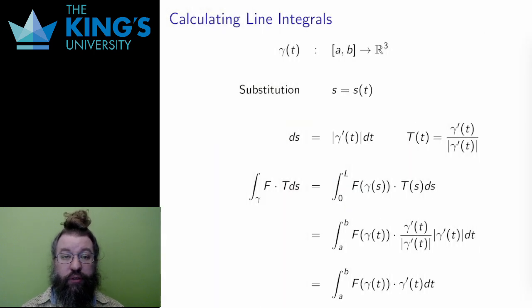Like all good definitions, the definition I just stated using parametrization by arc length is the best definition for proofs and theory, but not good for calculation, because parametrization by arc length is often very difficult to produce. I'd like to calculate in any parametrization. How do I do that?